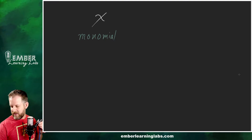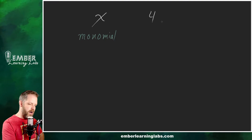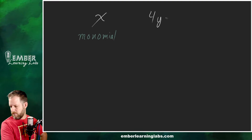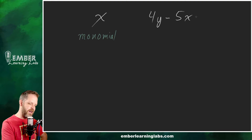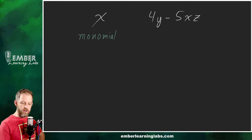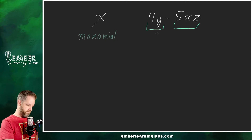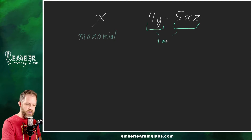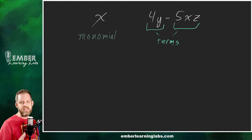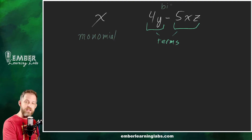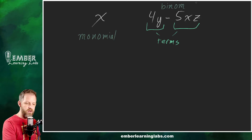Another example is 4y minus 5xz. This is also a polynomial. Where are the terms in this? Well, this and this are the terms. So the terms are the things that are added or subtracted together. This whole thing happens to be a binomial — 'bi' means two — so a binomial is a two-termed polynomial.